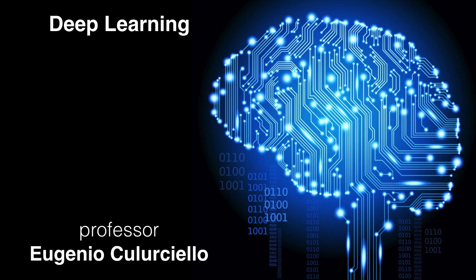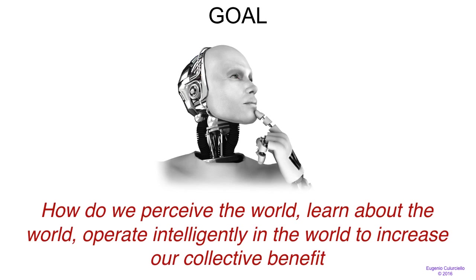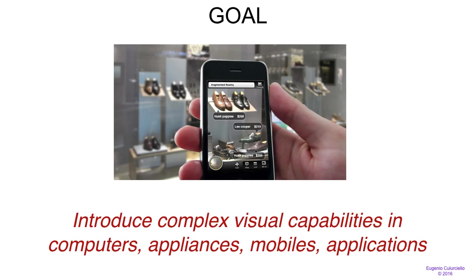This is Deep Learning from Purdue University. As we said previously, the goal of this course is to learn how to perceive the world and learn how to work and operate intelligently in the world. The idea is to train machines to perform visual capabilities like we do, so that they can become more useful in our world.